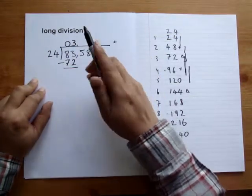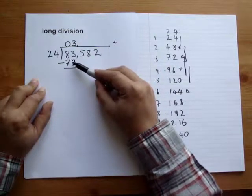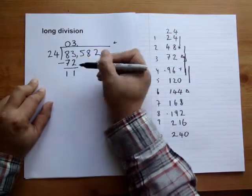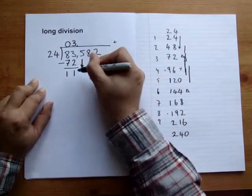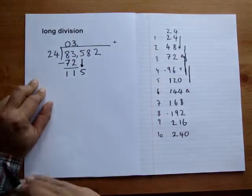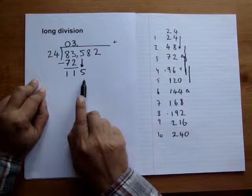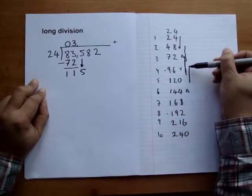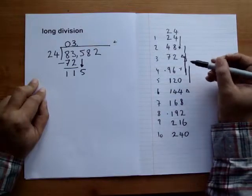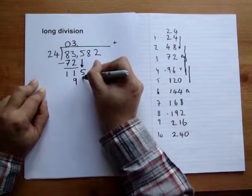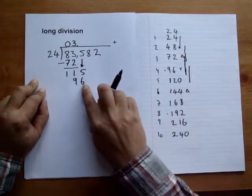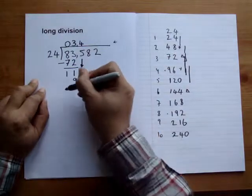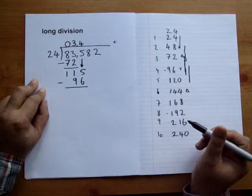We write the 72 here and we write the 3 over there on the top. Now we subtract the 72 from the 83 and we get 11. We bring down the 5. Now we say how many times does 24 go into 115? Go down the table and we find 5, we've gone over. Four is just less, that's what we want. So the answer is 96.